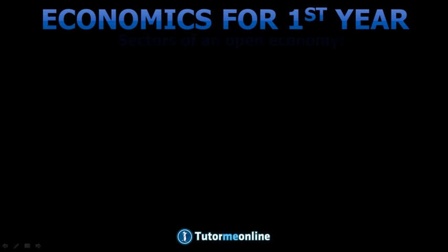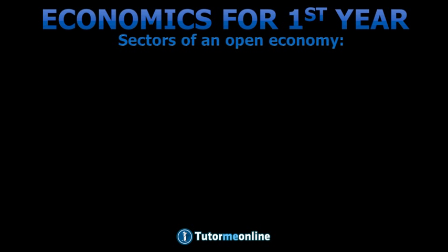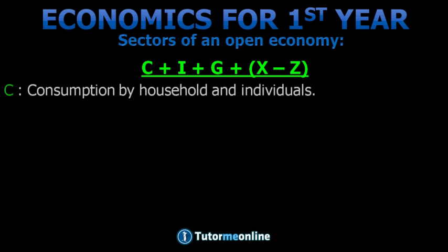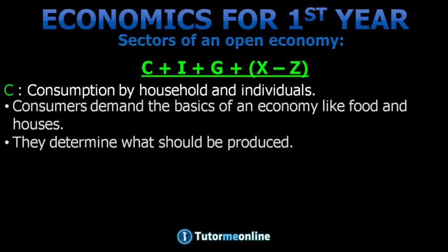Let's have a look at the sectors of an open economy. The formula C plus I plus G plus X minus Z explains the sectors of an open economy. C is for consumption by households and individuals. Consumers demand the basics of an economy, like food and houses. They determine what should be produced.